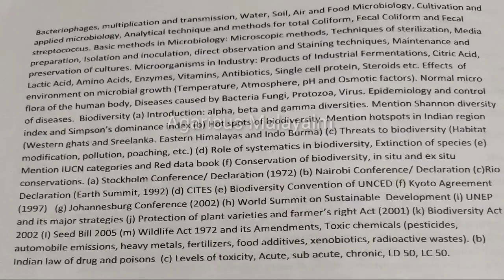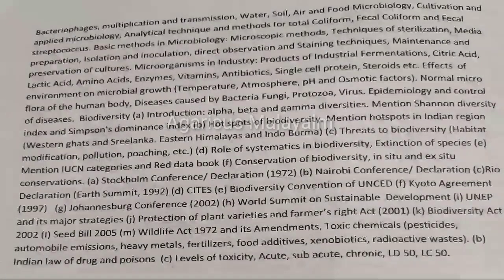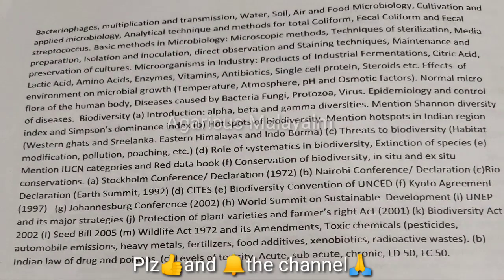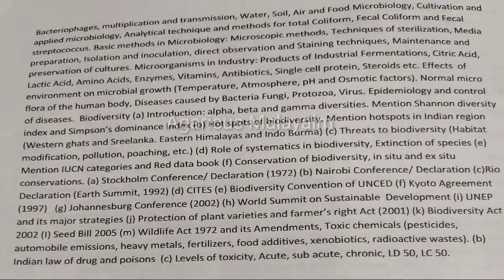Topics also cover diseases, costs of biodiversity, biodiversity hotspots, threats to biodiversity, role of systematic biodiversity, and extinct species. Toxic chemicals covered include pesticides, automobile emissions, heavy metals, fertilizers, food additives, xenobiotics, radio waste, and Indian law on drugs and poisoning, including levels of toxicity.